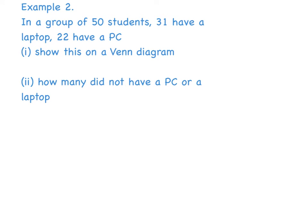The second example I'm going to talk about today is when we are given information and asked to show it on a Venn diagram. In a group of 50 students, 31 have a laptop and 22 have a PC. Show this information on a Venn diagram. How many did not have a PC or a laptop? First things first, I'm going to draw my square — my universe — and mark in my two circles.